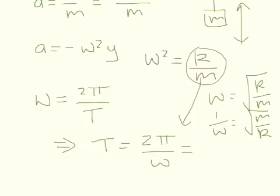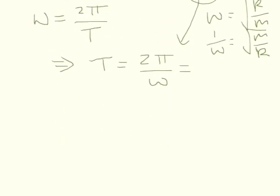Alright, and so when we put that in, I'm just going to bring it down so there's a little bit more room. I'm going to end up with T equals 2π times the square root of m over k.